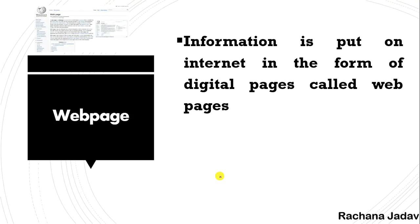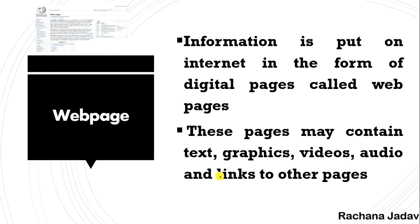A web page is a single digital page. In a web page there are text, images, videos, and graphics. When you open any link you get images and videos. For example, on Amazon or Flipkart when you open a product, you get details — text, videos, and demos related to it.